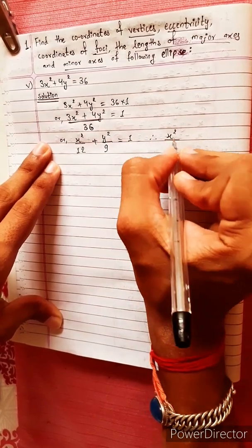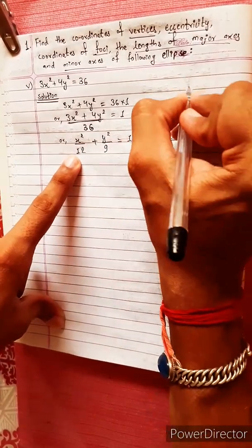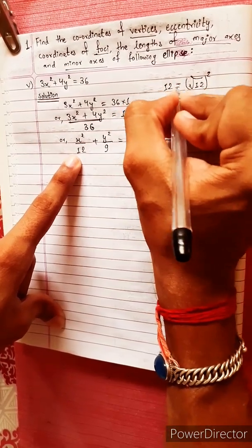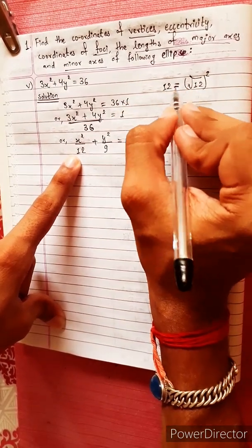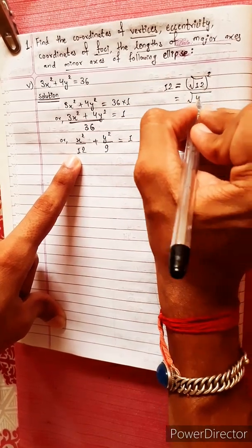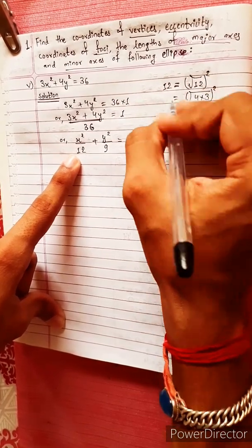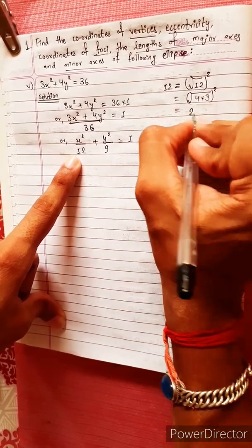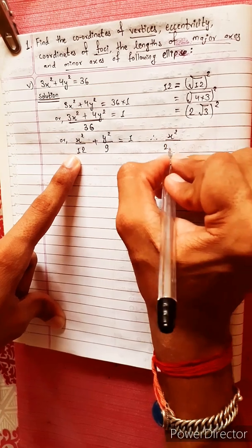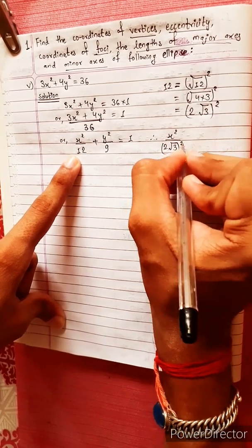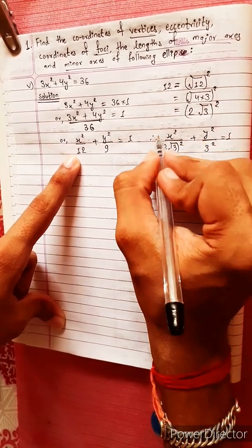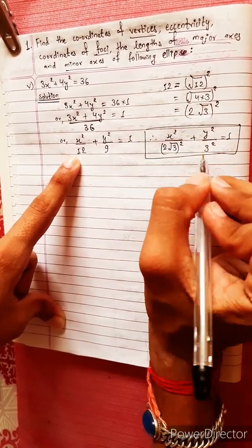Therefore x²/12 plus y²/9 equals 1. Now, under root of 12 equals 2√3, so we can write this as x²/(2√3)² plus y²/3² equals 1.